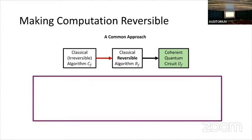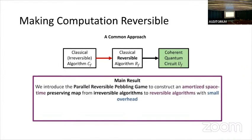In this work, our main result is that we introduce something called a parallel reversible pebbling, and we use it to map irreversible algorithms to reversible ones while maintaining the amortized space-time complexity, except for a small multiplicative overhead.